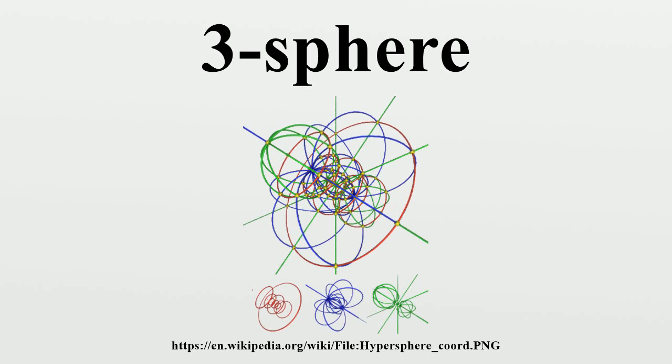Topological Properties: A three-sphere is a compact, connected, three-dimensional manifold without boundary. It is also simply connected.